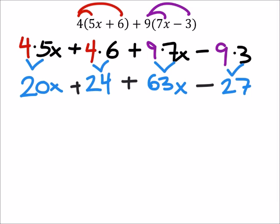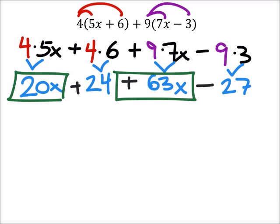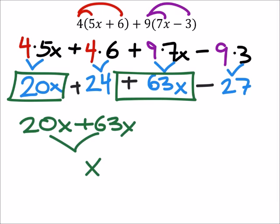Now let's go ahead and find like terms. So first I've got our 20x right here, and then a 63x. So that's a 20x plus 63x. Which, if I combine these as x's, I've got 20 plus 63, which would give me 83x's.